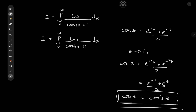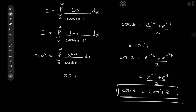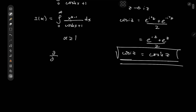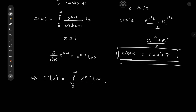To evaluate it, we actually have a side quest first. We're going to evaluate the integral function I of some parameter α defined as the integral from zero to infinity of x to the α minus 1 divided by cosh(x) plus 1 dx, where α is defined to be greater than or equal to 1. If we differentiate partially with respect to α, x to the α minus 1 gives x to the α minus 1 times log(x). So the derivative of I with respect to α equals the integral from zero to infinity of x to the α minus 1 times log(x) divided by cosh(x) plus 1 dx, where we've invoked the Leibniz rule.